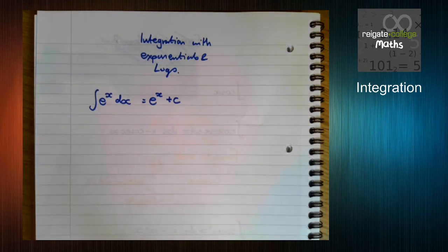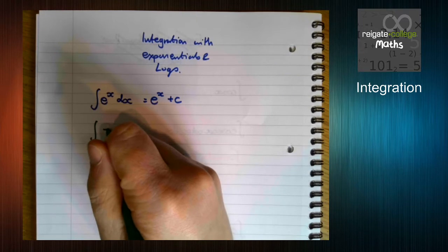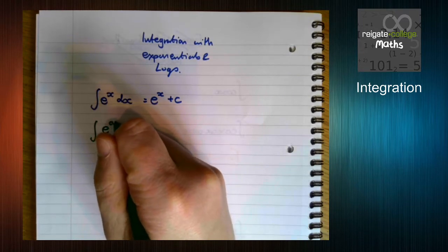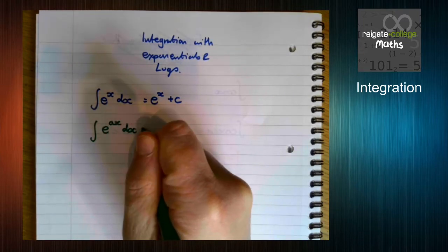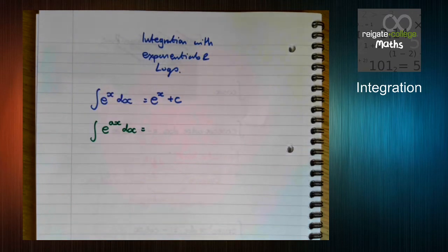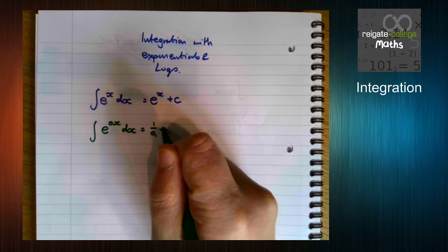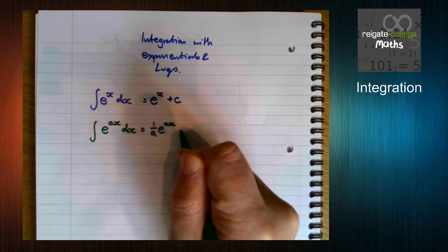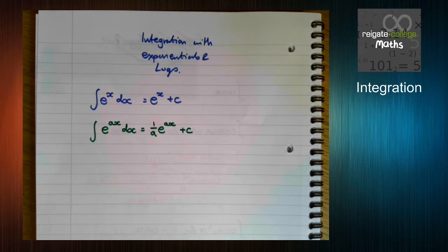Now much like with trigonometry, if we start putting numbers inside our function, we've again got to think about what would differentiate to get e to the power of a times x. But we know when we differentiate, we times by the coefficient of x. So when we integrate, we divide by the coefficient of x.